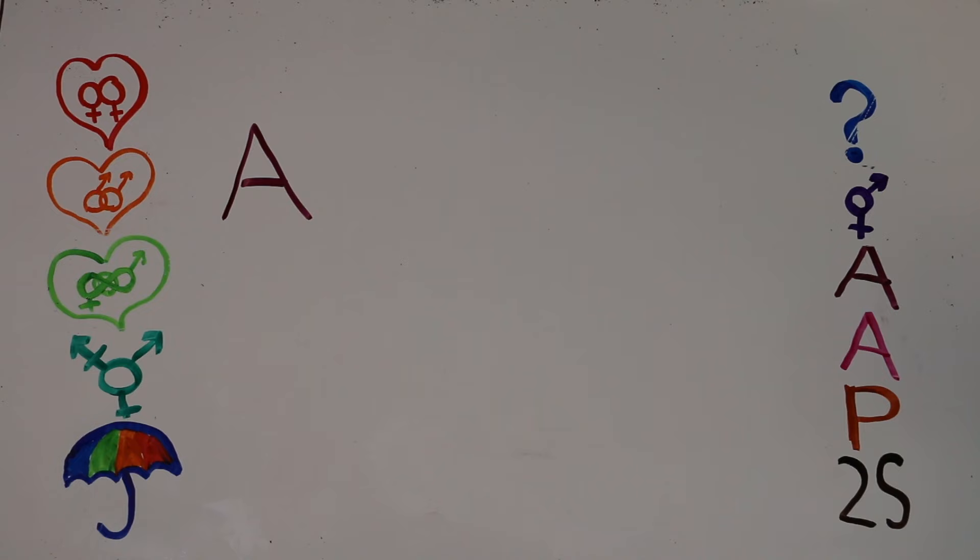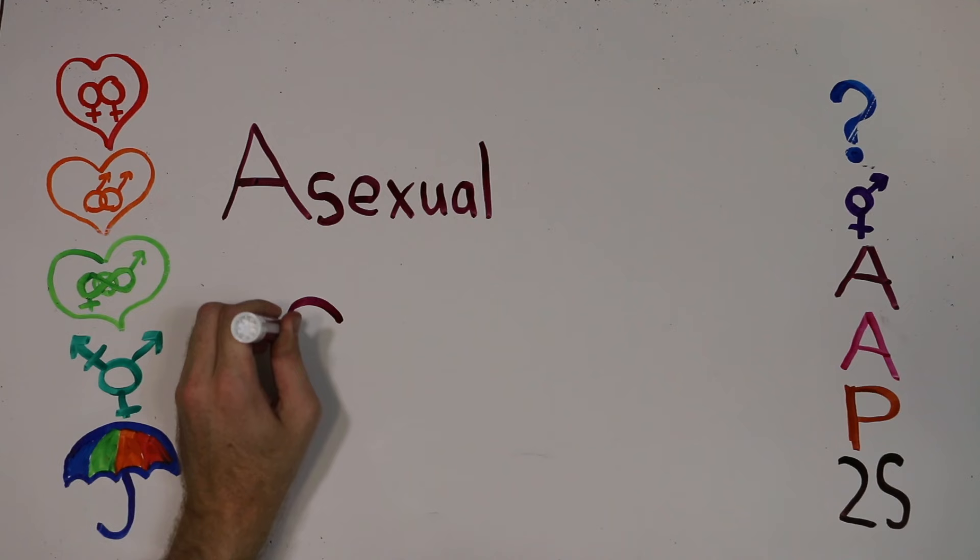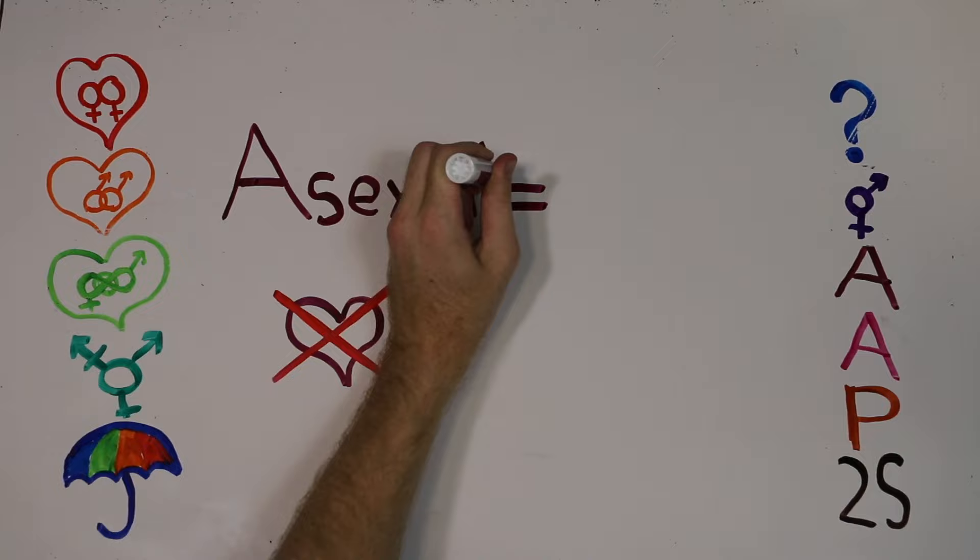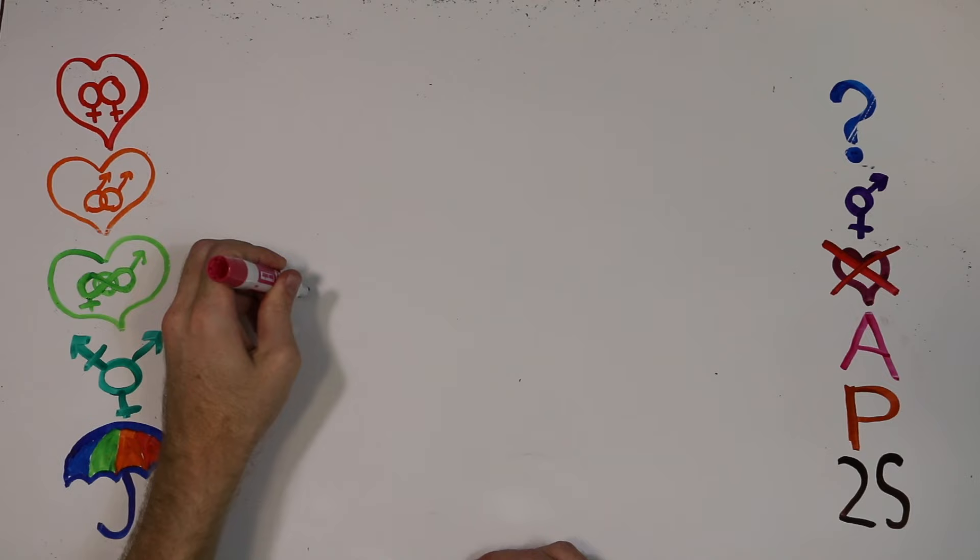The first A in this litany of letters stands for asexual — a person who feels only romantic attraction, not sexual attraction, towards any gender. This is not to be confused with agender, which describes people who identify as neither male nor female.